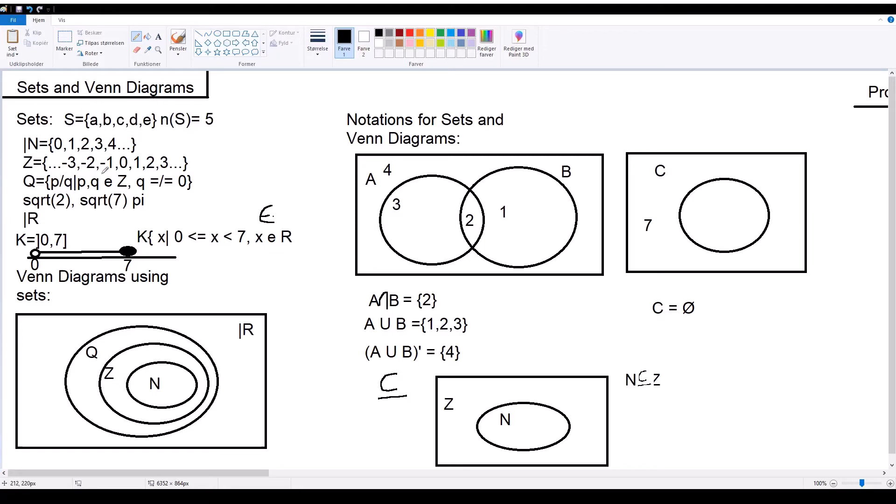One example of sets you can use is with all the different types of numbers. First, we have the natural numbers. Natural numbers are all whole numbers starting from 0 and counting positively. So, this would be 0, 1, 2, 3, 4, and so on.